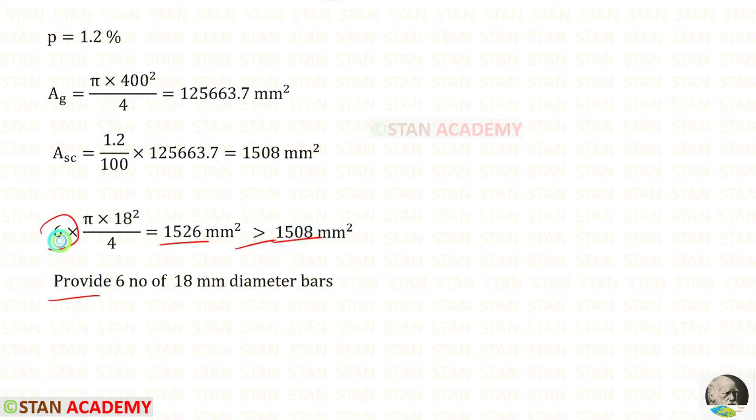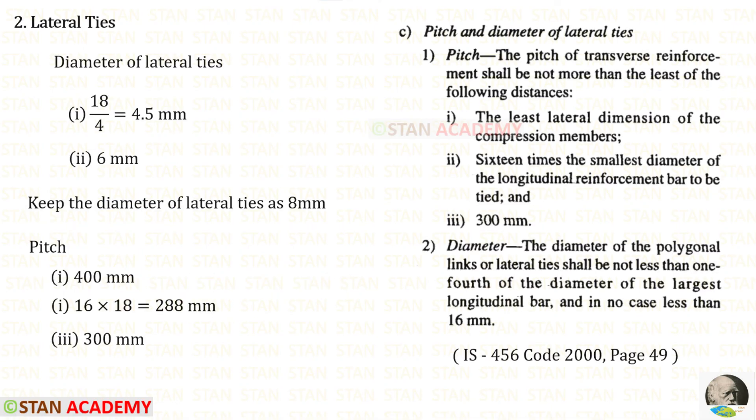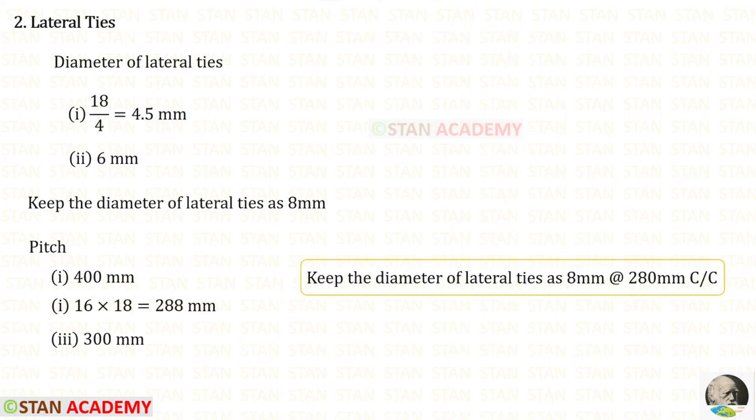So let us provide six numbers of 18 millimeter diameter bars. We know how to design the diameter of the lateral ties and the pitch. We have seen in the previous videos. Let us keep the diameter of the lateral ties as 8 millimeter at 280 millimeter center to center.